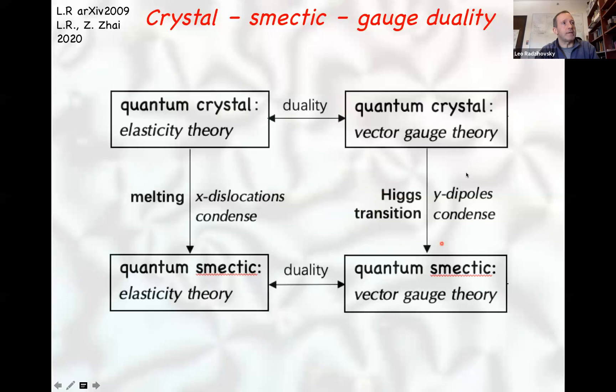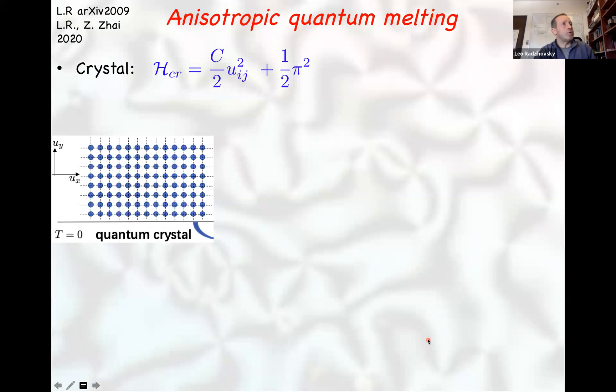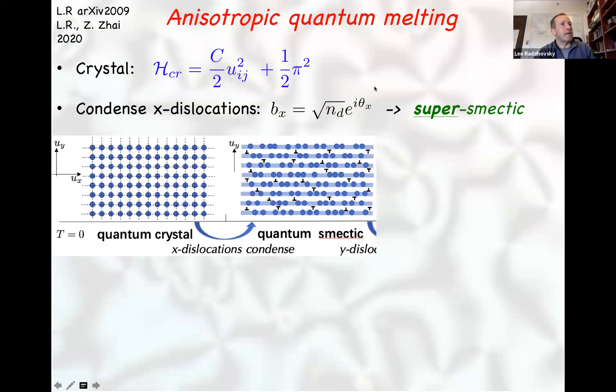This gives us a detailed understanding of the phase transitions from quantum crystal to quantum smectic, and then to nematic. Starting from a crystal and condensing x-dislocations gives a super smectic — it is a quantum super smectic by necessity, since pairs of x-dislocations make vacancies and interstitials that both condense. Then condensing y-dislocations takes you to a quantum nematic.